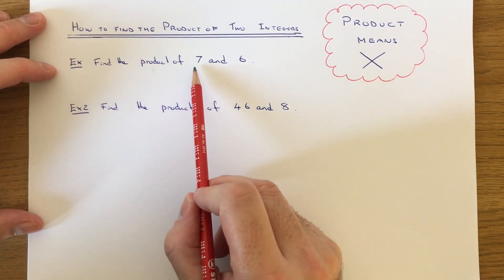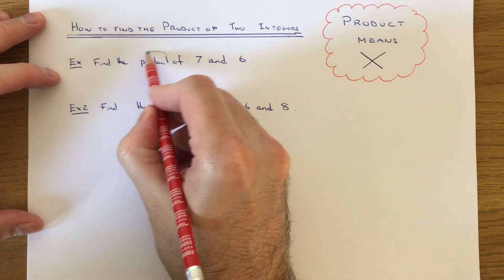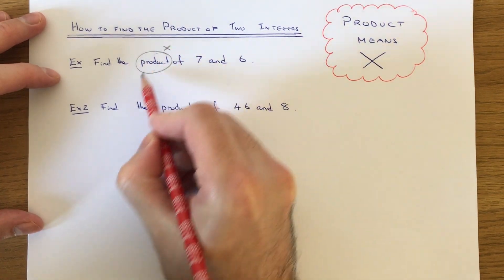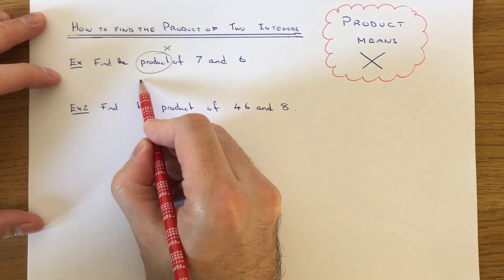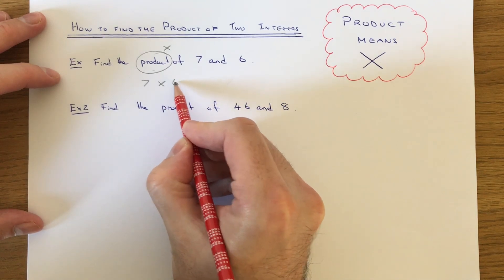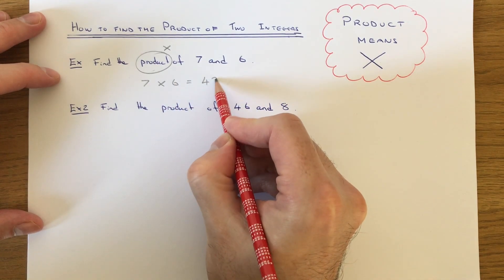Example one, we've got to work out the product of seven and six. So we just need to remember that product means times. So we just have to do seven times six, which is 42.